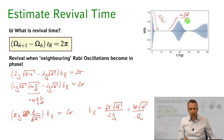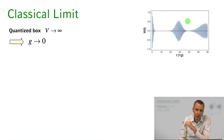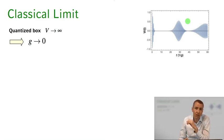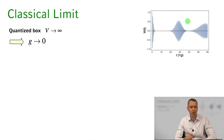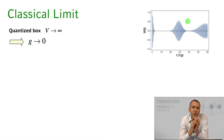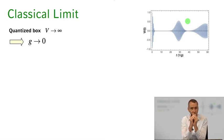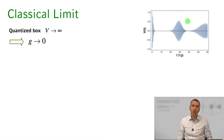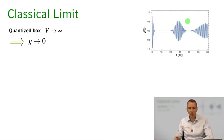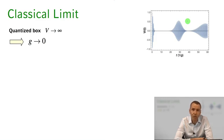Now let's take a look at how we can derive the classical limit from these equations — how we recover the classical Rabi oscillations from the semi-classical treatment. To have a pronounced collapse with a very short timescale, we need a large coupling constant. A large coupling constant means the quantized volume of the box used to derive the radiation field modes had to be very small. The classical limit is the opposite: we take the box size to infinity so that quantization doesn't matter and we recover the continuum limit.